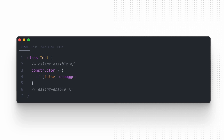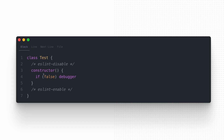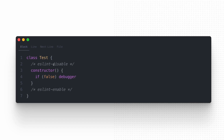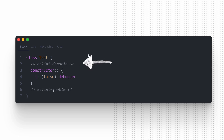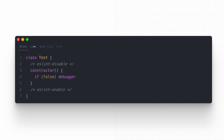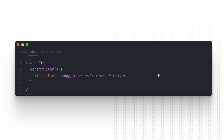For example, if we don't want ESLint to check specific code blocks, you can use the following comments which disable and enable ESLint too.